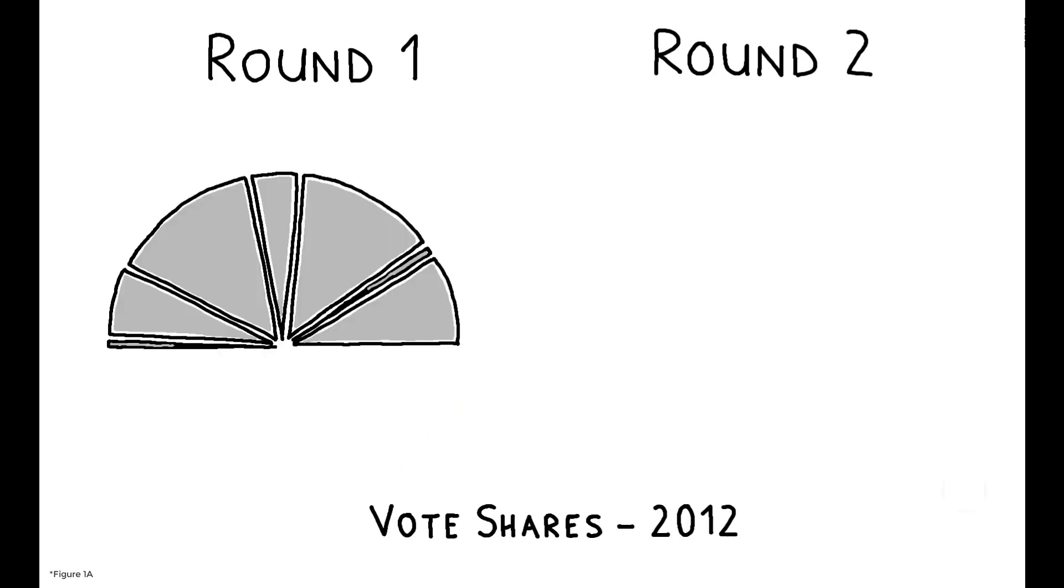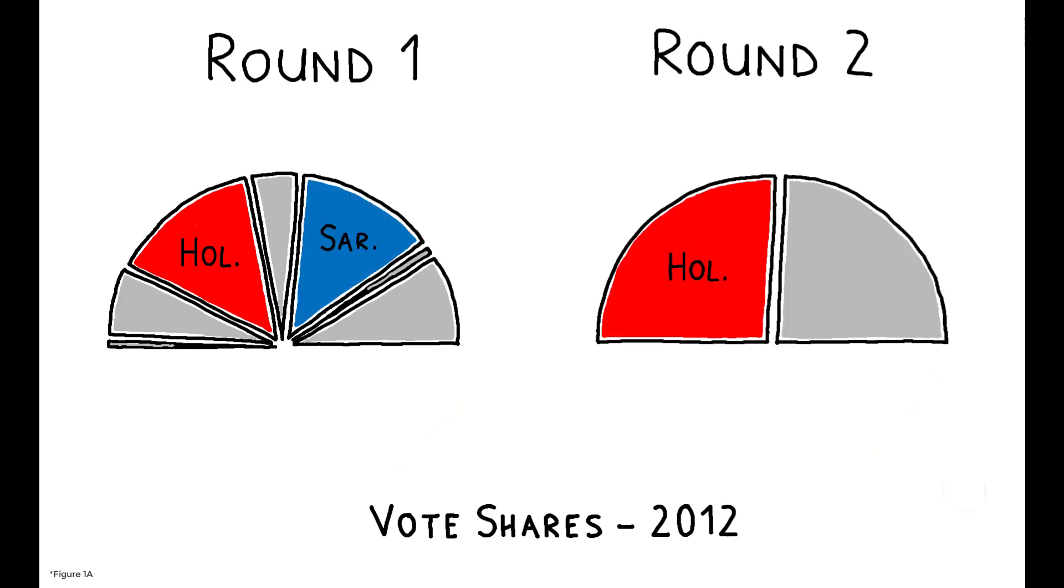In terms of results, Hollande advanced out of the first round, along with the incumbent, Nicolas Sarkozy, and then subsequently won in the second round with 51.6% of the vote and was elected president.